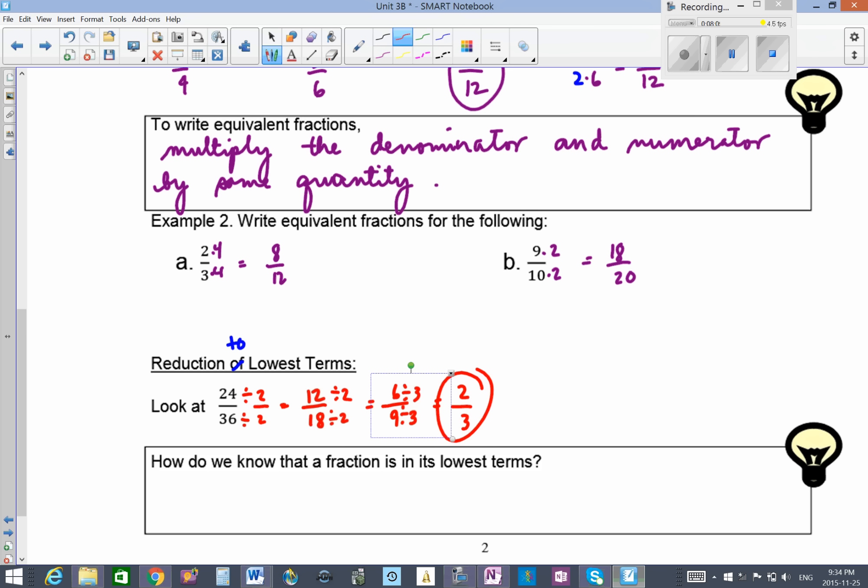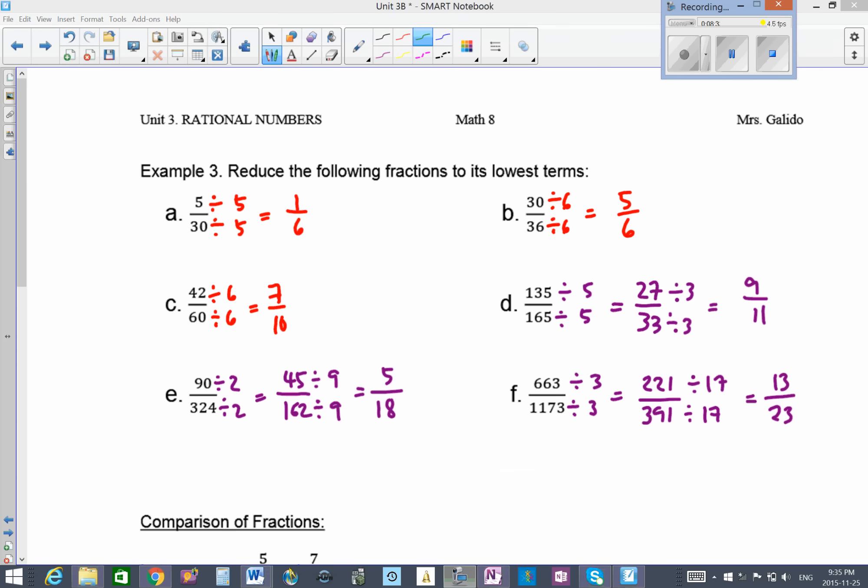How do we know that the fraction is in lowest terms? We look at each number here, numerator and denominator in 2 and 3. What do you know about 2 and 3? Obviously, their common factor is 1.